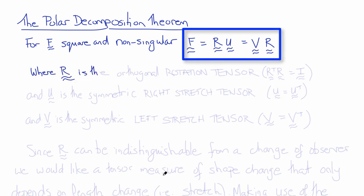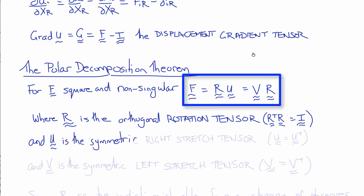Here, R is the orthogonal rotation tensor. It has the property that R transpose R equals I, or RR transpose equals I. And U is the symmetric right stretch tensor. So U equals U transpose. In the alternative form of the polar decomposition theorem, V, which is also symmetric, is called the left stretch tensor. So V equals V transpose.